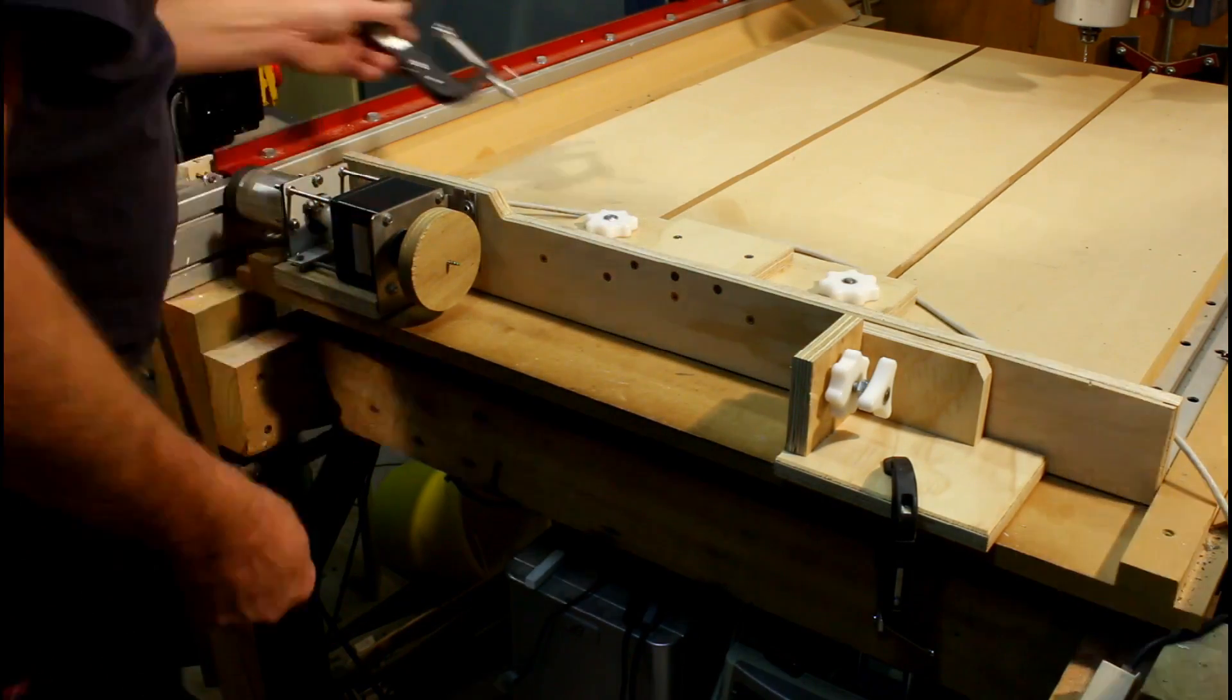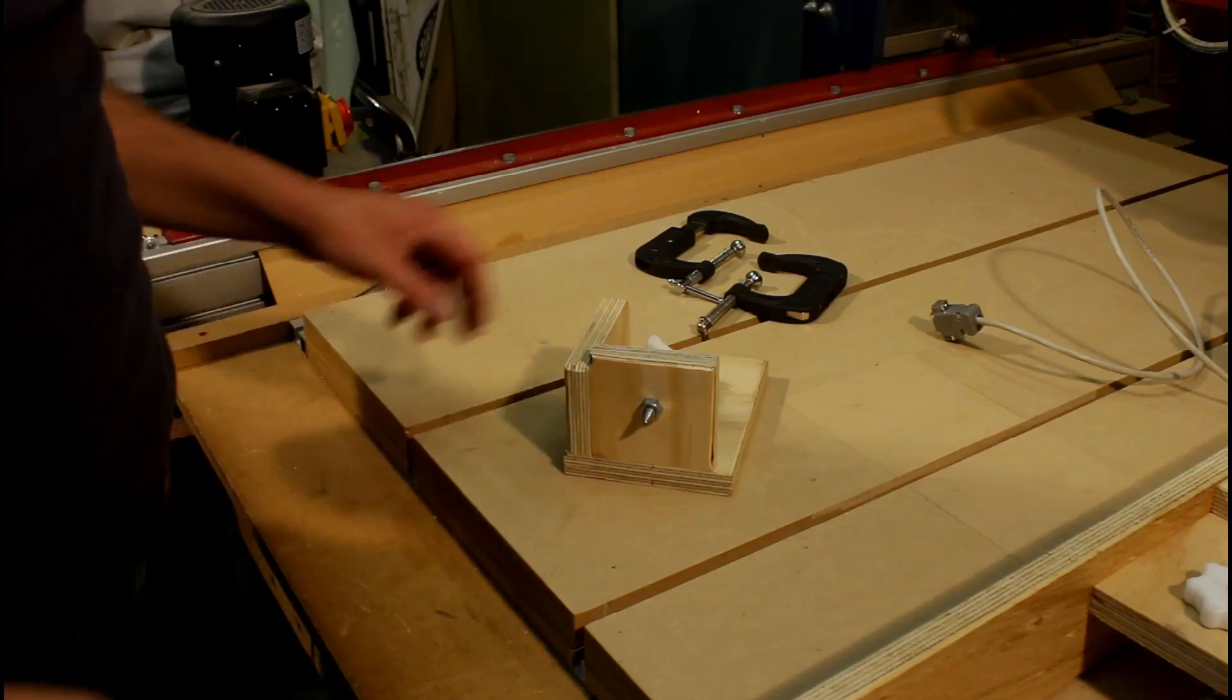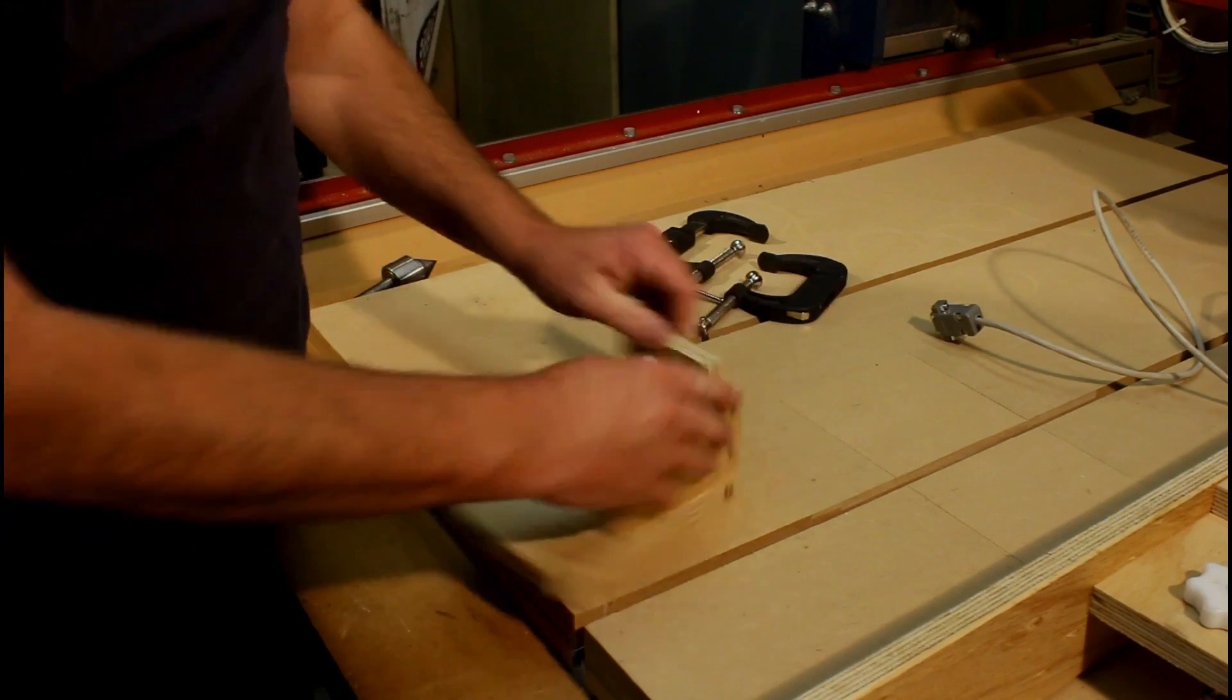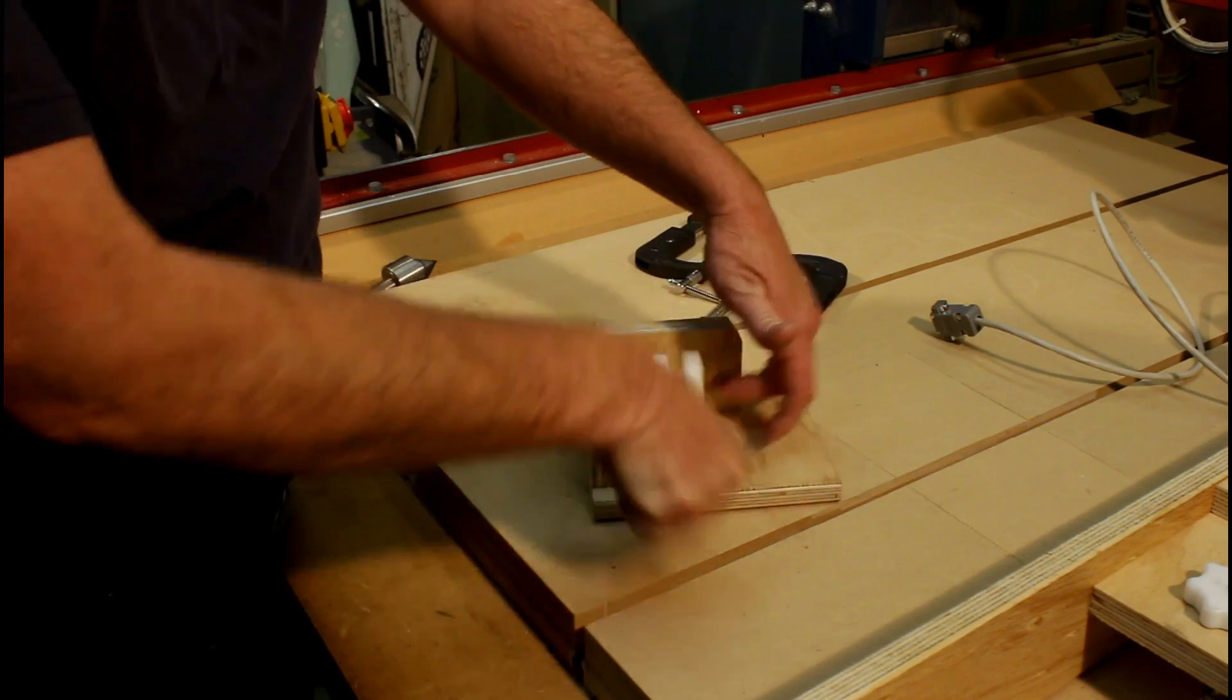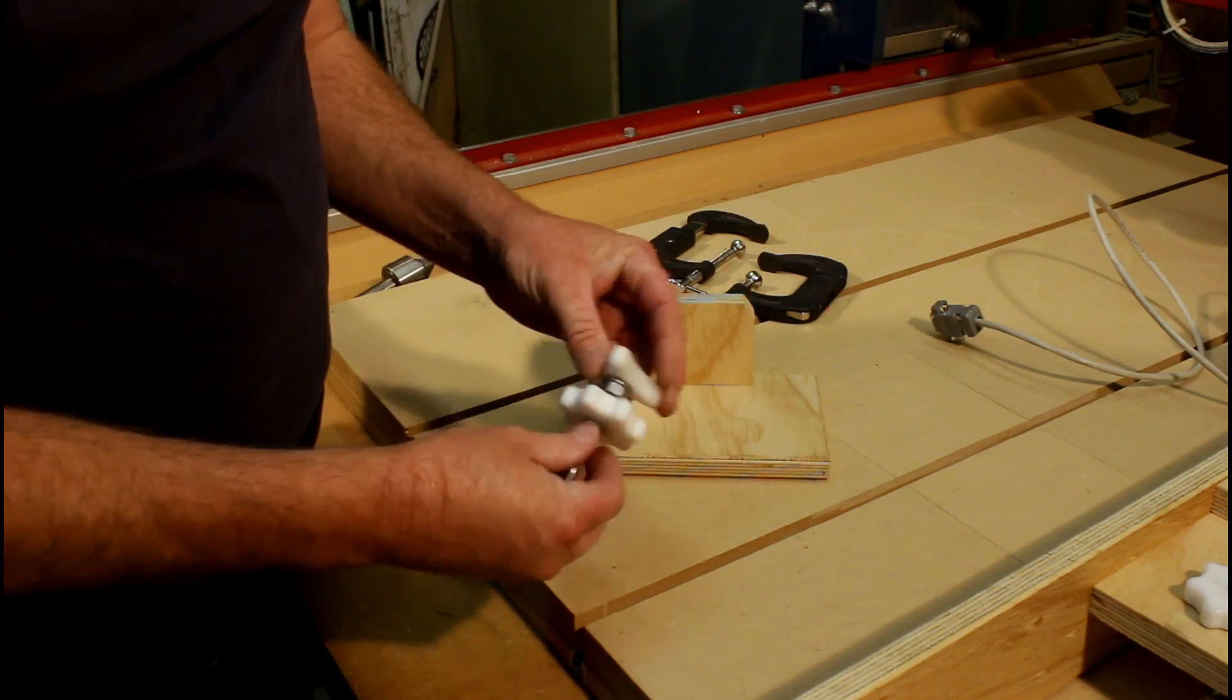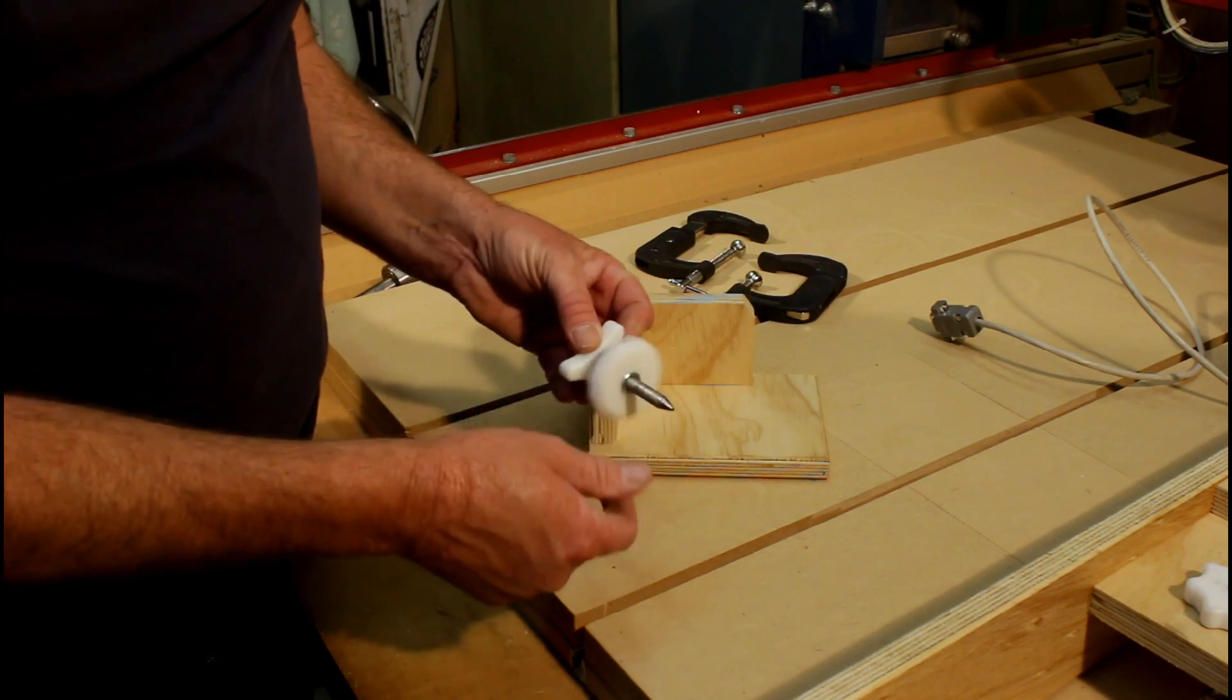Now the tailstock is very simple. It just consists of a piece of threaded rod. I'll just pull the part here, it's a piece of, in my case, eight millimeter threaded rod. On that I've put a handle that I made on the CNC machine.